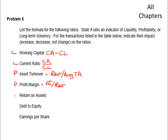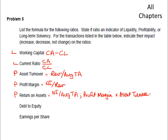Return on assets is also a profitability ratio, and it is net income divided by average total assets. Return on assets also equals profit margin times asset turnover. The reason is that profit margin is net income divided by revenue, and asset turnover is revenue divided by average total assets — the revenues cancel out, leaving net income over average total assets. So you can use two ratios to gain insight into the return on your resources.